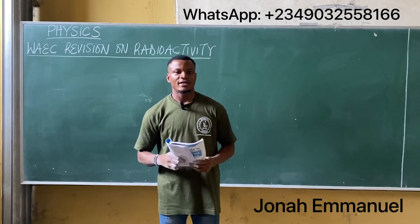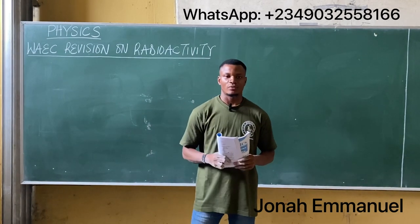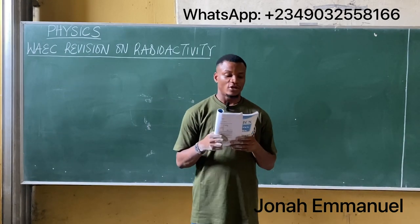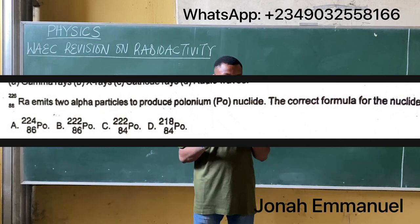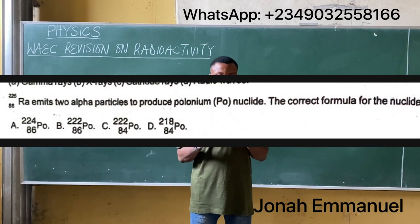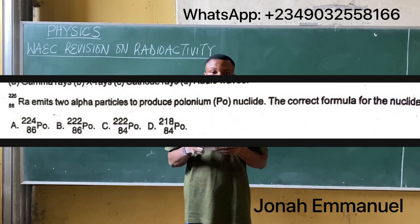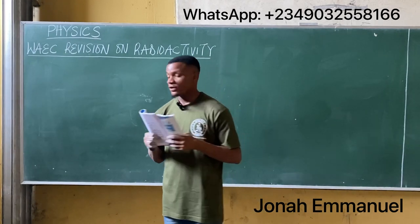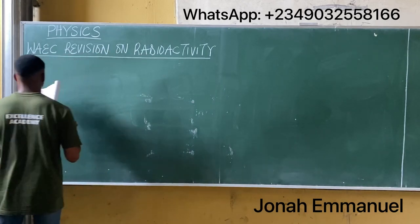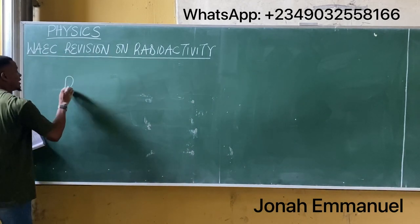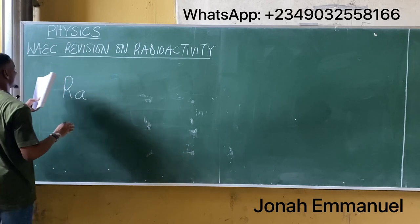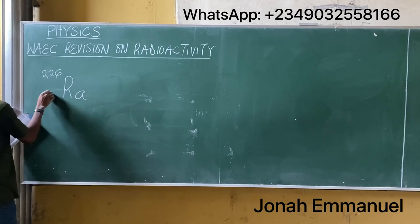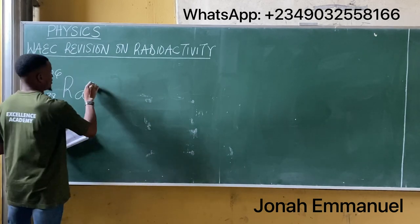Let's try another revision question on radioactivity. This question says: radium-226 emits two alpha particles to produce a polonium Po nuclide. What is the correct formula of the nuclide? We have radium Ra, given as mass number 226 and atomic number 88. It emits two alpha particles.